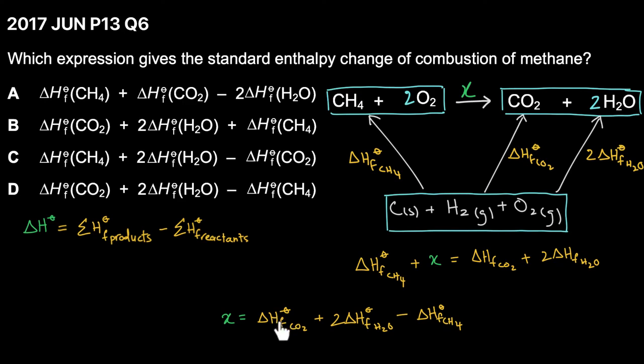is equal to delta HF CO2 plus two delta HF H2O minus delta HF CH4. When we look at our answers, we realize that the answer to the question is D: delta HF CO2 plus two delta HF H2O minus delta HF CH4.